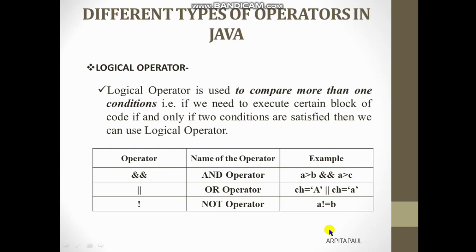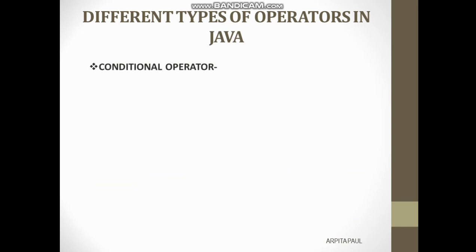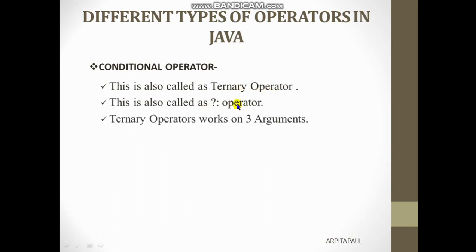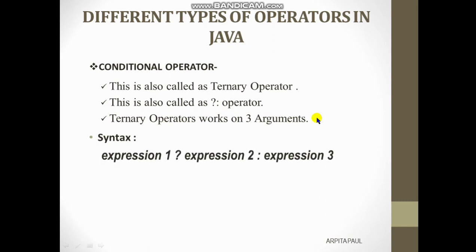Now coming to the next operator — the conditional operator, also called the ternary operator or question-mark-colon operator. It is called ternary because it works on three arguments. It uses three expressions: expression one, followed by a question mark, then expression two, followed by a colon, then expression three.